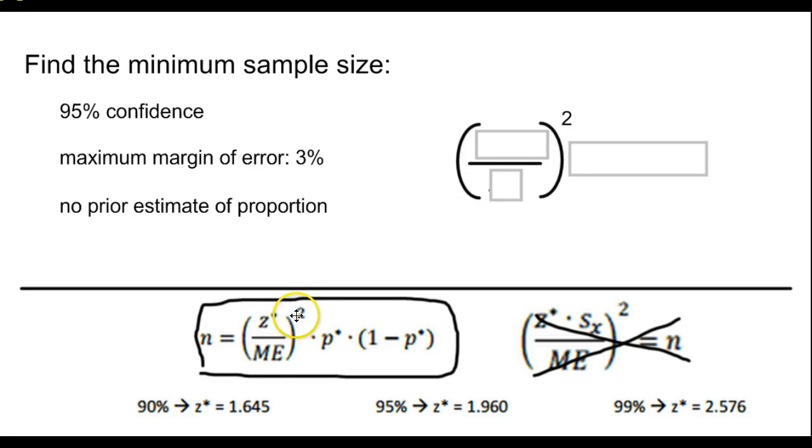Our z-star comes from how confident we are. So if we are 95% confident, we have a z-star 1.96. So we plug that in right here up on top.